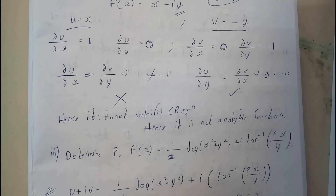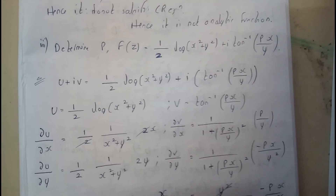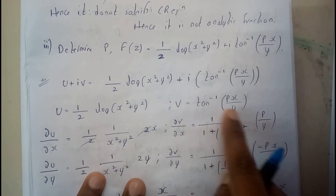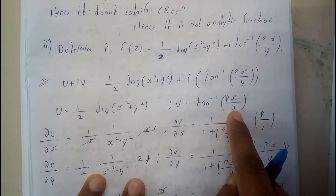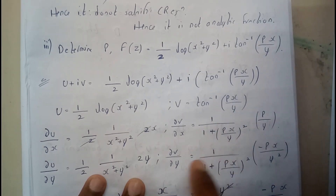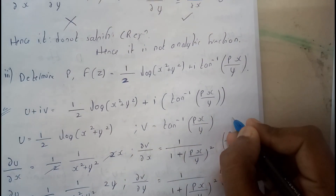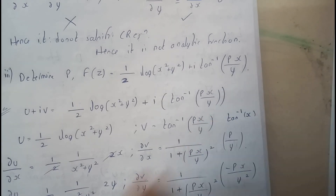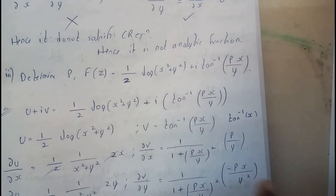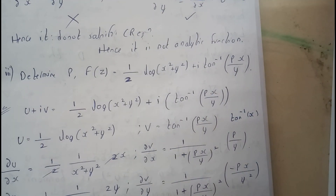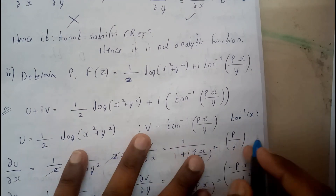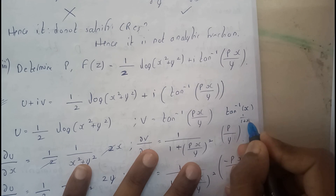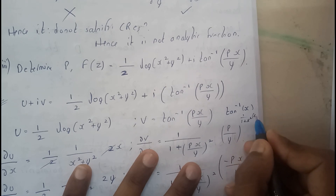There is one more problem which you can try out yourself. As a reminder, the differentiation of tan⁻¹(x) is 1/(1 + x²) multiplied by the derivative of the inner function.